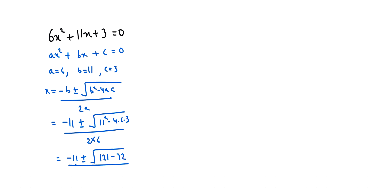Now x = (-11 ± √(121 - 72 is 49)) / 12 and square root of 49 is 7.